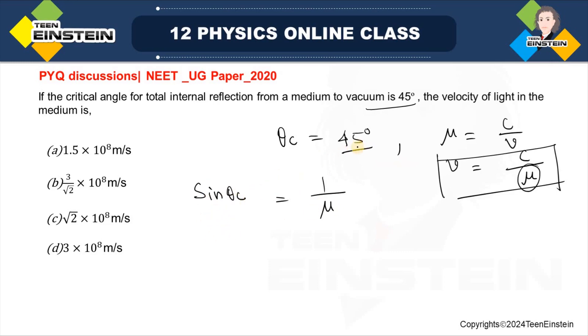So what is theta C? That is 45 degree angle. So sin 45 degree will be 1 by root 2, right? That means mu will be root over 2.